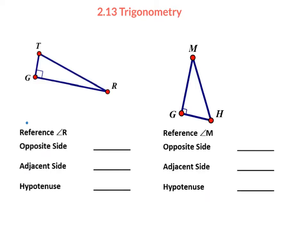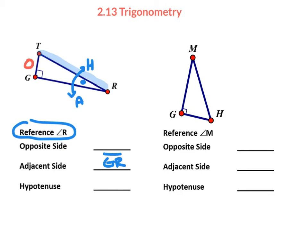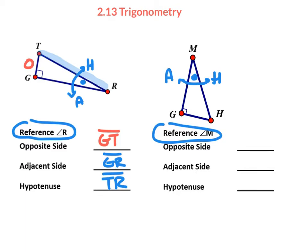Let me demonstrate proper labeling. If the reference angle is at R, I make a little arc, which always touches the adjacent and the hypotenuse. The hypotenuse is the longer side. So the adjacent is GR, the hypotenuse is TR, and the opposite is GT. In the next case, with reference angle M, the opposite side is GH, the adjacent is MG, and the hypotenuse is MH.